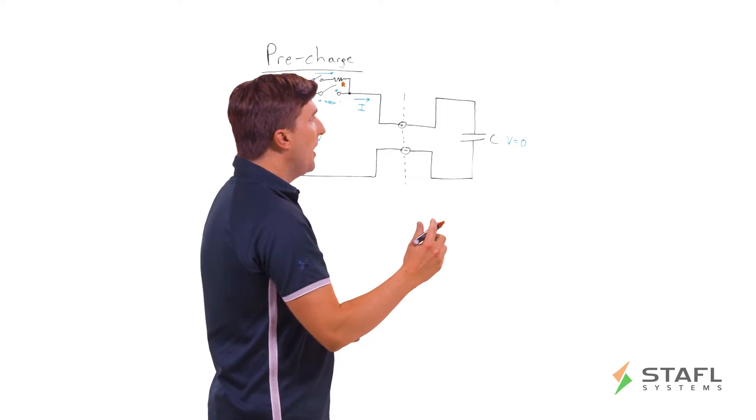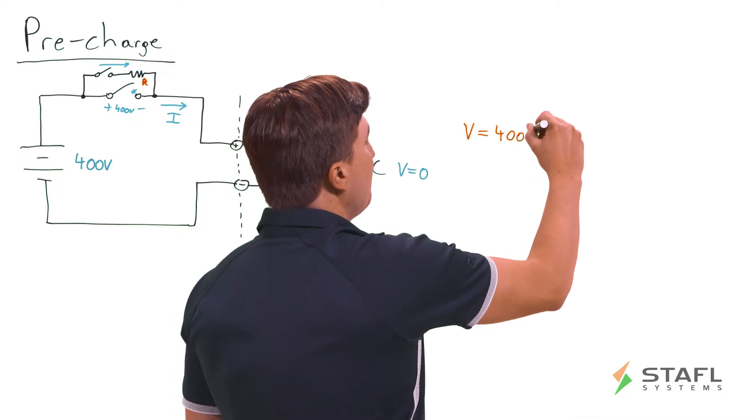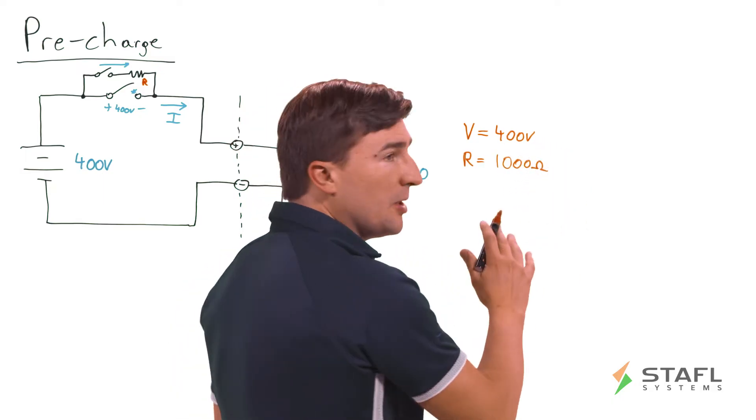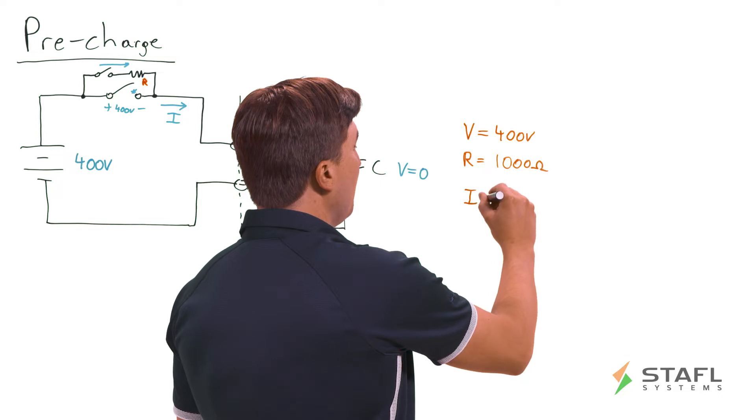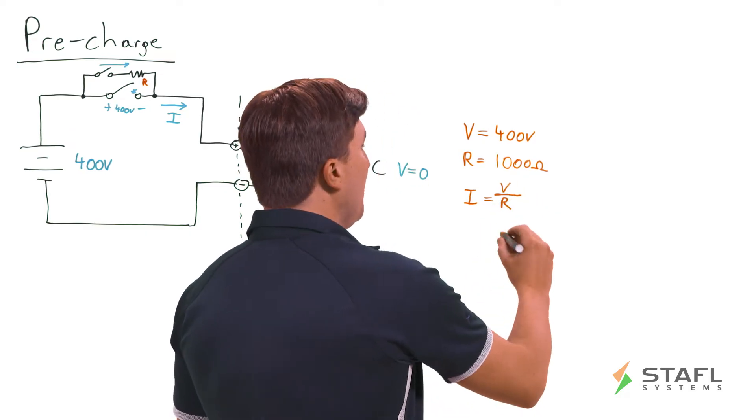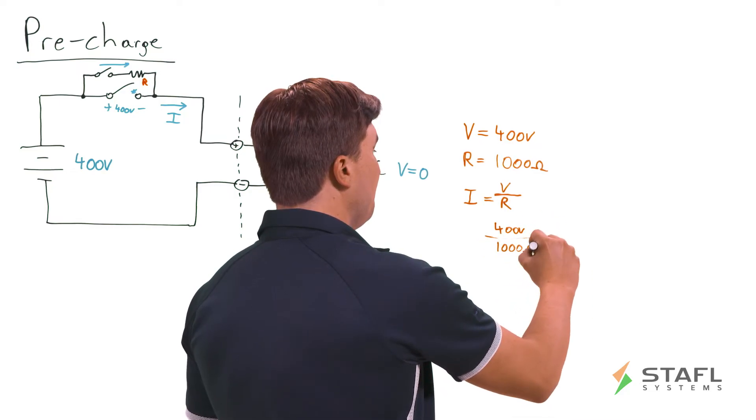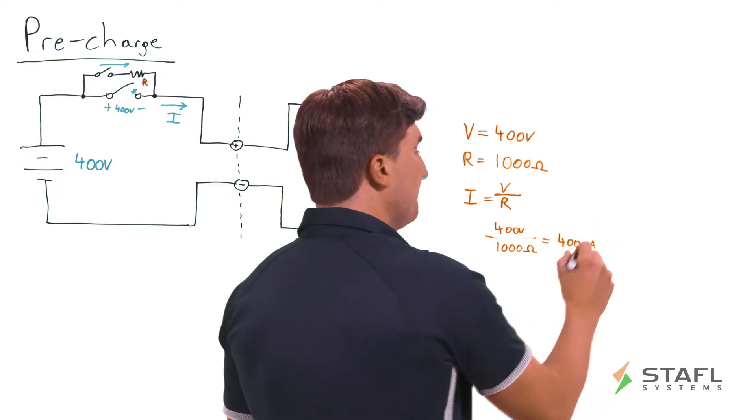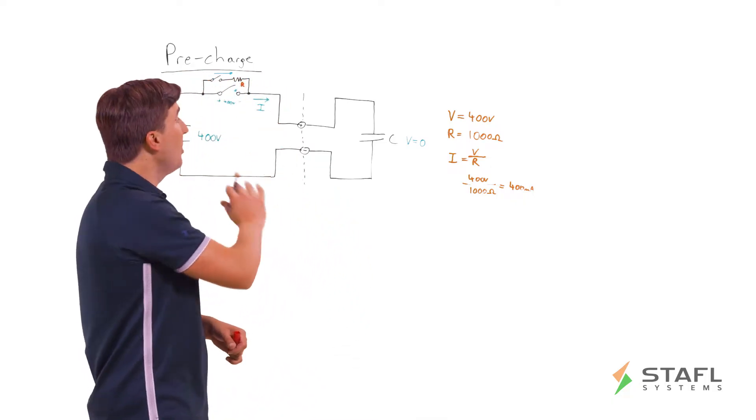So let's give an example of the case where we have a battery voltage of 400 volts and a resistor of 1000 ohms. Somewhat typical values you might see in a pre-charge system. Remember, the amount of current flowing through a circuit is the voltage divided by the resistance. Ohm's law. So in this case, we would have 400 volts divided by 1000 ohms. So we would have 400 milliamps of current flow. That is a far more gentle situation than thousands of amps in an uncontrolled inrush. So already, we're doing well.